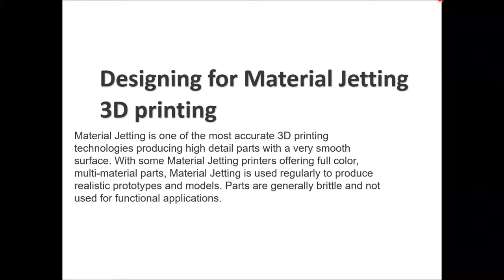As we discussed before, material jetting is considered one of the most accurate 3D printing technologies that can give you highly detailed parts with a very smooth surface. Some material jetting printers can give you full color, multi-material parts. They are usually used to create realistic visual prototypes and models, but these parts are brittle and not designed for functional applications — they give excellent results for visual illustration and educational purposes.